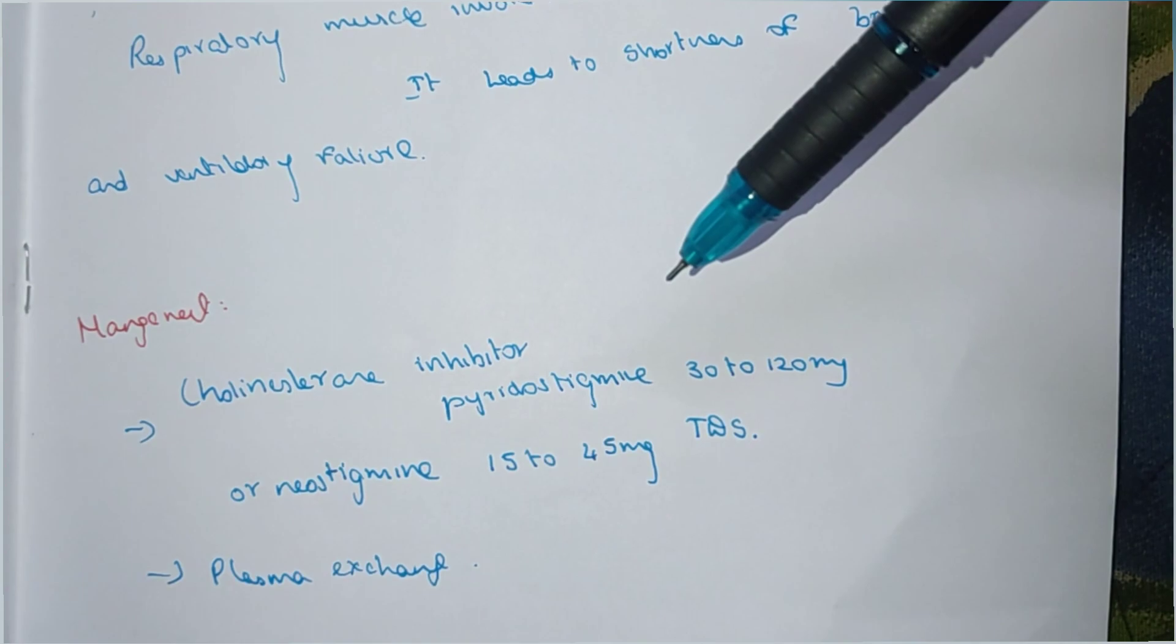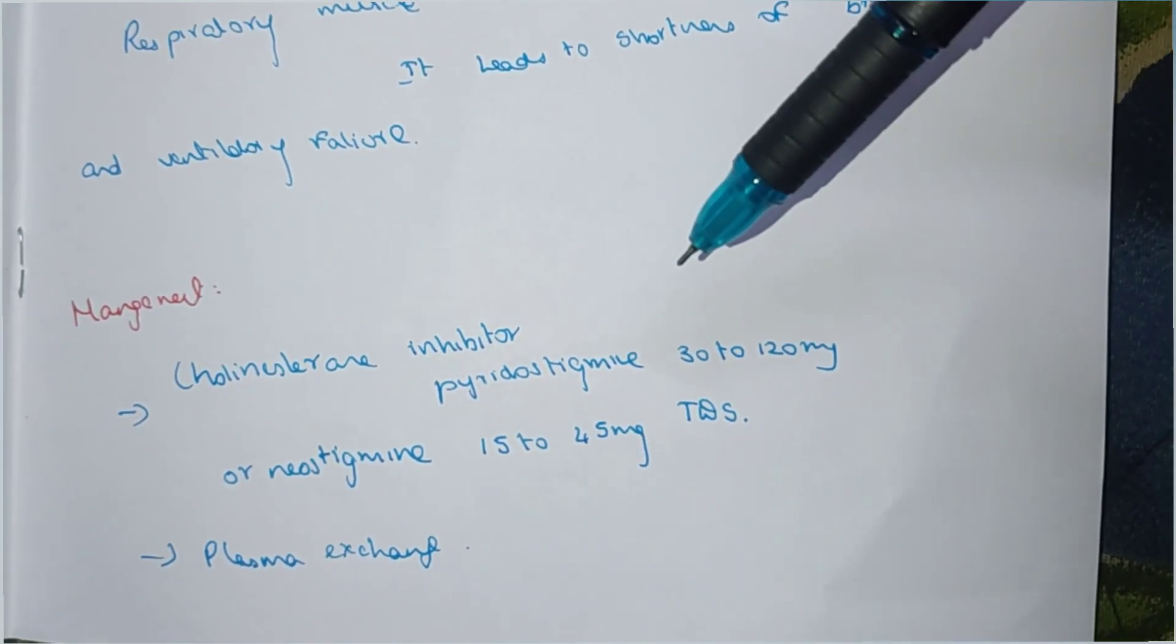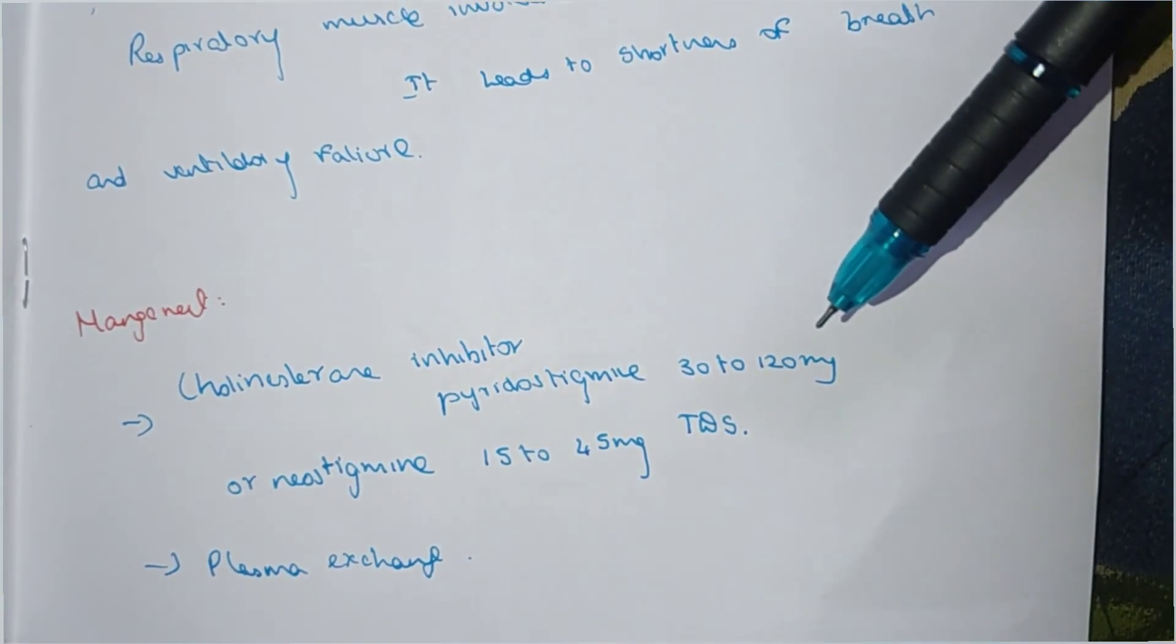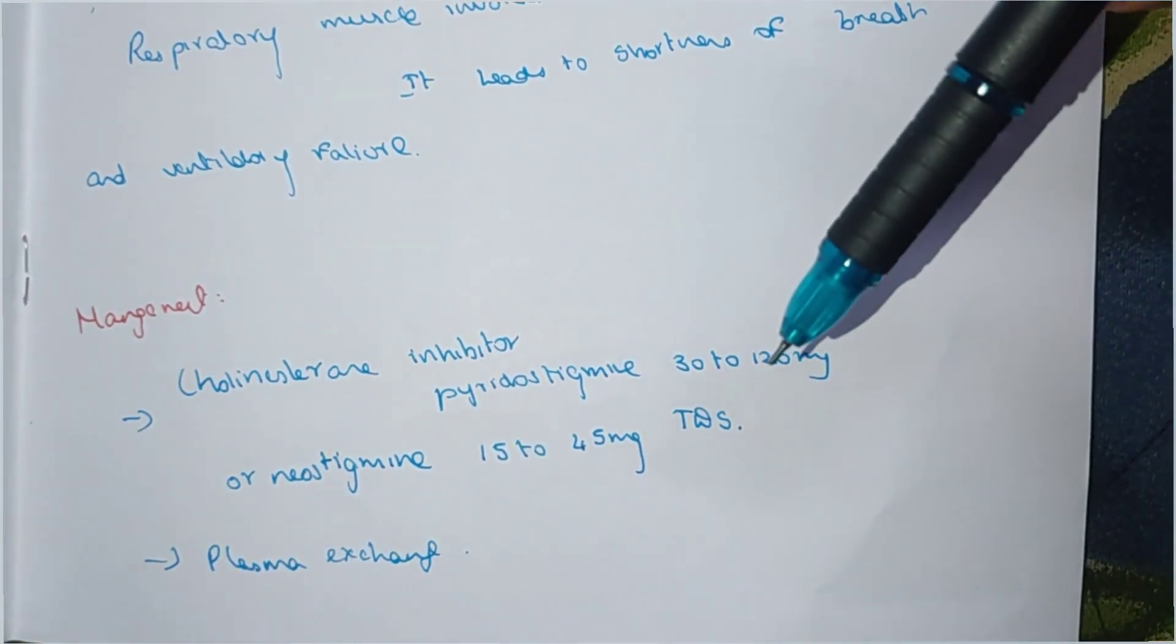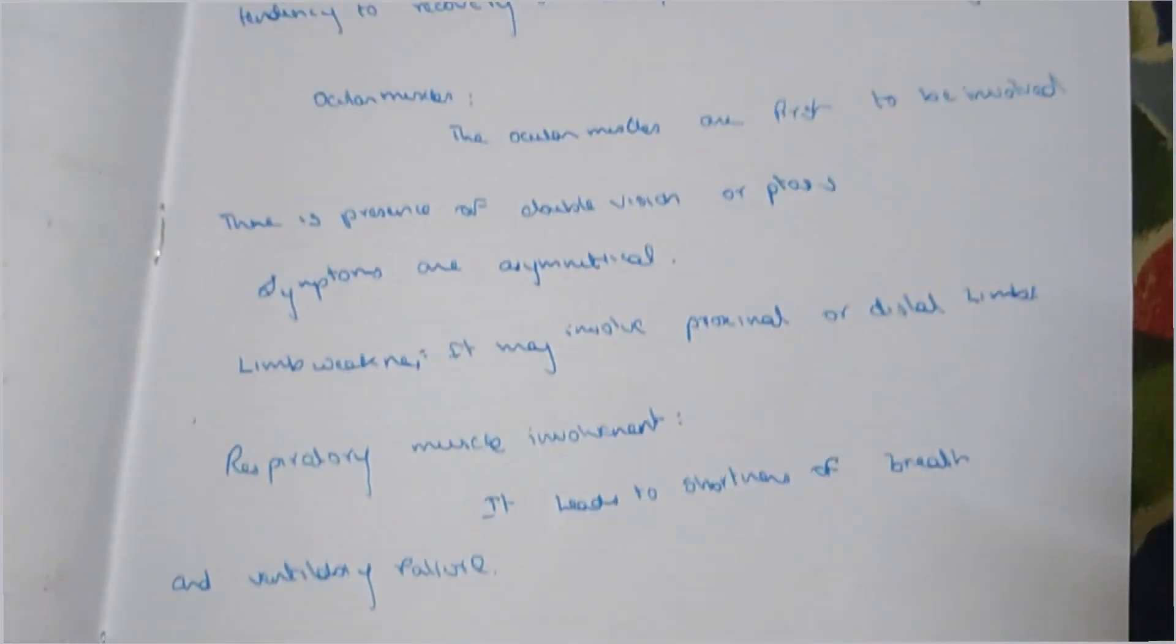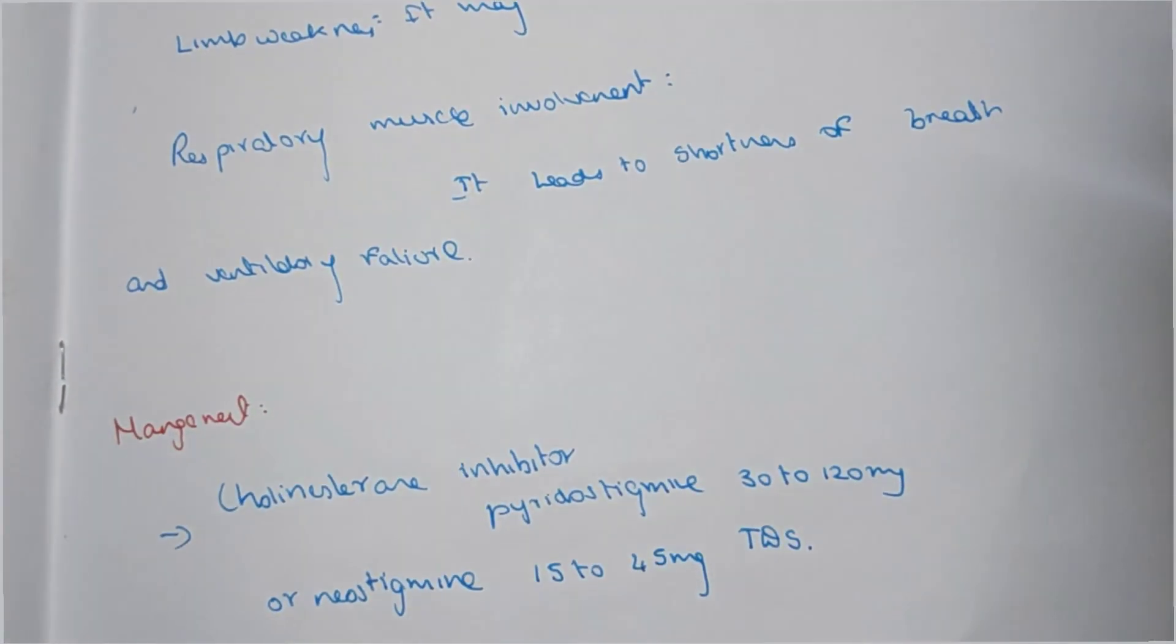Cholinesterase inhibitors: Pyridostigmine 30 to 120 mg, Neostigmine 15 to 45 mg. Plasma exchange. This is the myasthenia gravis management.